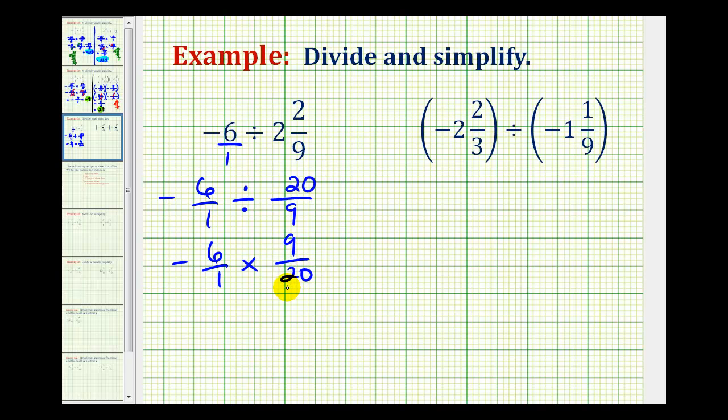And now before we multiply, we do want to simplify. Notice how the six and the 20 do have a common factor of two, and I always like to show that. So I'm going to write six as two times three. The nine's not going to simplify. And I'll write 20 as two times 10, knowing the common factor is two here and here.